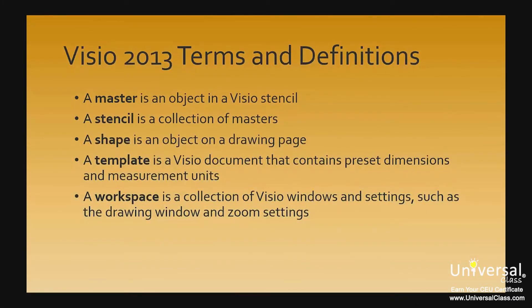Before going further, it's important to understand the terms used in Visio 2013. A master is an object in a Visio stencil — you can use masters that come with Visio or download some from the internet. A stencil is a collection of masters. Think of it like this: you buy a set of paints — the entire set is the stencil, and each individual jar of paint is a master.